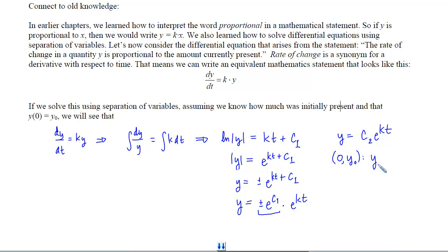In other words, that c sub 2 will equal y sub 0. Go back and write the solution. We get y equals y sub 0 e to the kt.